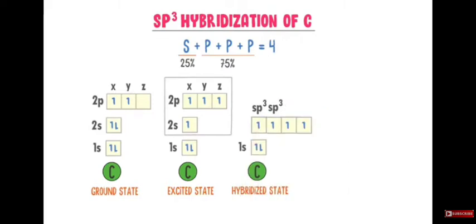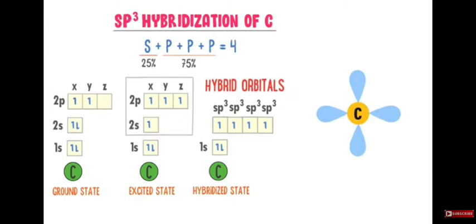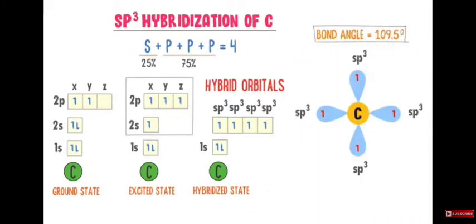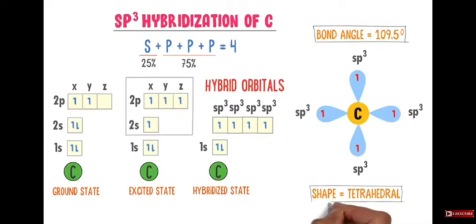The 2s orbital and all three 2p orbitals (x, y, z) mix and combine together to form four sp3 hybrid orbitals, each having one electron with the same spin. These four sp3 orbitals give carbon its tetrahedral geometry. The bond angle in sp3 hybridization is 109.5 degrees, and the shape of the molecule is tetrahedral.